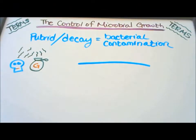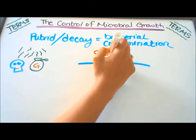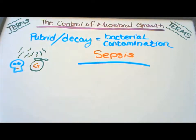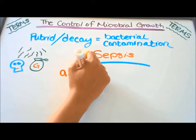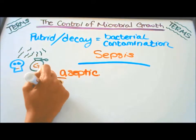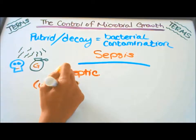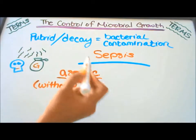Our last term and definition: putrid or decay means there is bacterial contamination — this is called sepsis. An area or object that is free of pathogens is called aseptic. The 'a' means without, and 'septic' means putrid or decay.